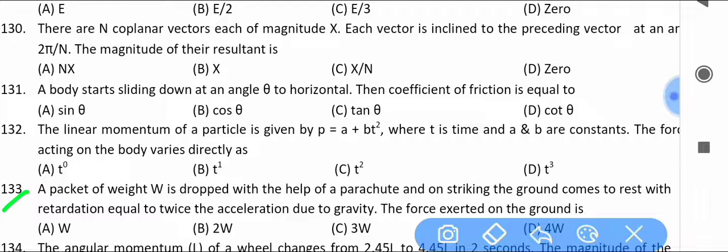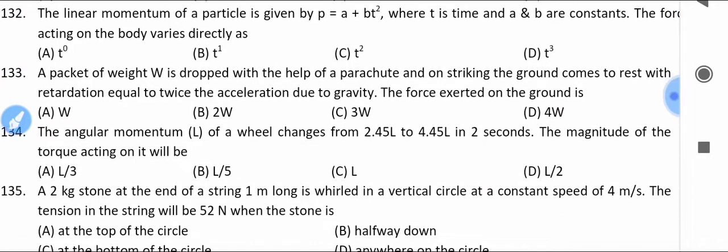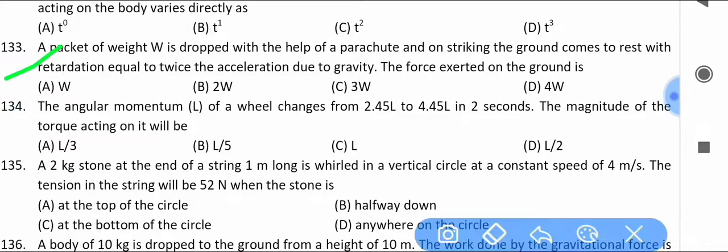A packet of weight W is dropped with the help of a parachute and on striking the ground comes to rest with retardation equal to twice the acceleration due to gravity. Find the force exerted on the ground. You can see the options.